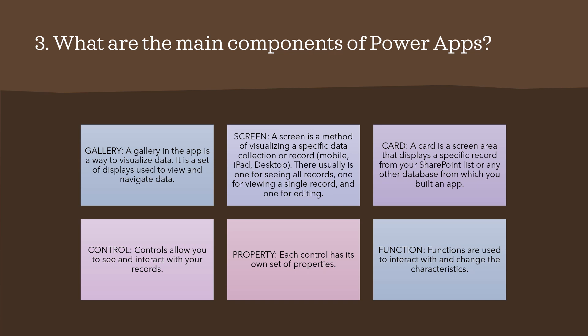What are the main components of Power Apps? There are mainly six components: the gallery control, screen, card, control, property, and function. A gallery in the app is a way to visualize data — it is a set of displays used to view and navigate data.